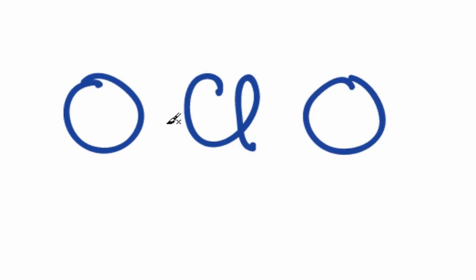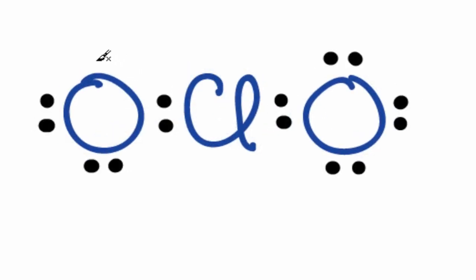We'll put two electrons between the oxygen and the chlorine to form chemical bonds. We've used four valence electrons, then around the oxygens, so we have 2, 4, 6, 8, and 16.